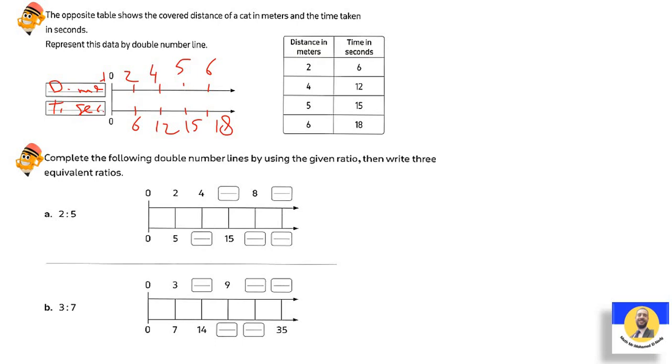The next one: Complete the following double number line by using the given ratio, then write 3 equivalent ratios. You have in the first 2:5, 4 to what? 2 becomes 4, by 2, so 5 by 2 is 10. The next: 5 by 3 is 15, so 2 by 3 is 6. 2 by 4 is 8, so 5 by 4 is 20. We can write any number else here, it's 10, and there it's 25. The next one: 3:7. 7 becomes 14 by 2, so 3 by 2 is 6. Here by 3, so 7 by 3 is 21. We can write by 4, so 3 by 4 is 12, and 7 by 4 is 28. Then by 5, 3 by 5 is 15, and 7 by 5 is 35. So we took the idea of number line ratio, how we can do it by using tape diagram or by using the number line.